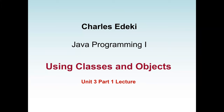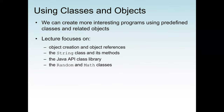Welcome to Java Programming 1. In these lectures, we are going to learn how to use the built-in classes and objects given by the Java API — that is, Java Application Program Interface — which consists of Java library files. This is lecture unit 3, part 1. Our objective is to learn how to create an object, discuss what is an object reference, and how to use the Java API class library files, which normally consists of Java packages and classes.